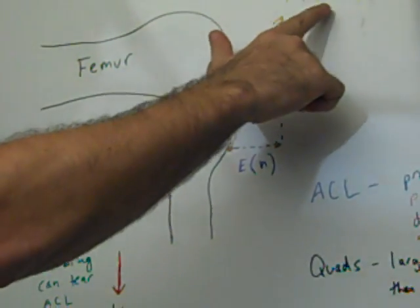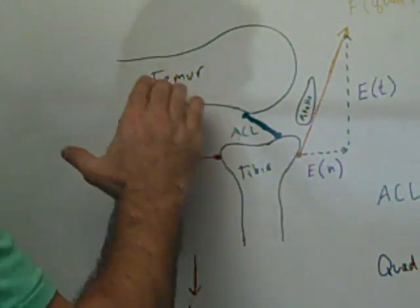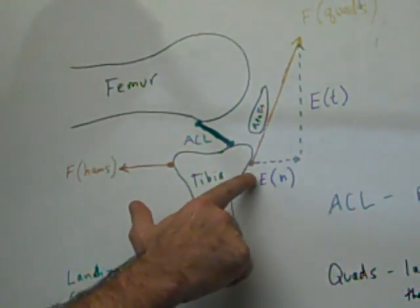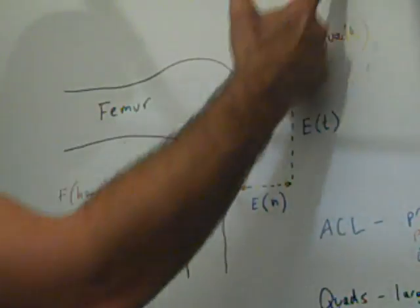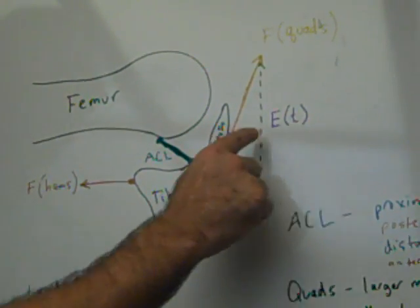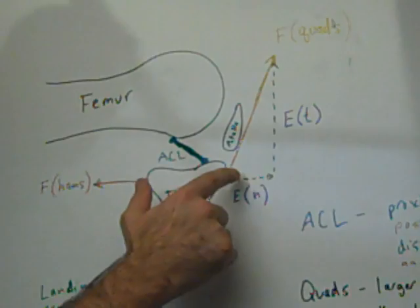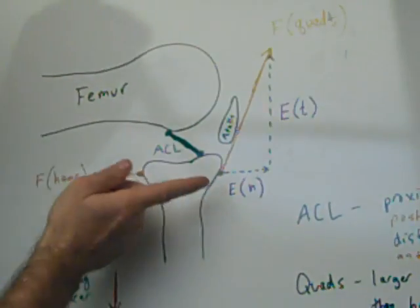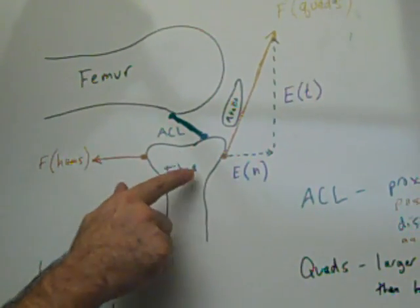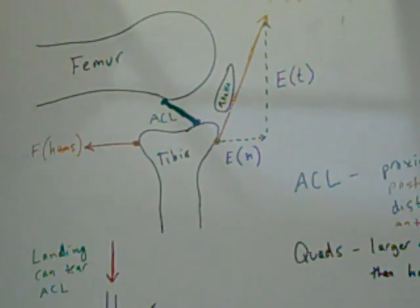So when the quadriceps contract, because it wraps around the patella, this is bent with a leg bent at 90 degrees. When the quadriceps contract, you get a force vector going this way. So you get a normal component and a tangential component to the force, but it's in this direction. So just having the quadriceps contract is going to pull this way and provide an anterior force on the tibia. So just having strong quads puts that ACL at risk.